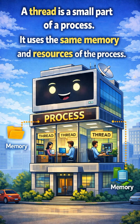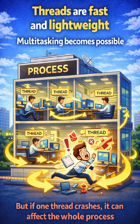A thread is a small part of a process. It uses the same memory and resources of the process. Threads are fast and lightweight, which makes multitasking possible. But if one thread crashes, it can affect the whole process.